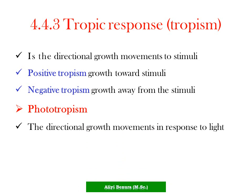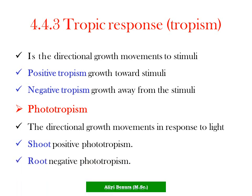Phototropism is the directional growth movement in response to light. For example, the shoot is positively phototropic, whereas the root is negatively phototropic. This means the shoot grows toward the light, while the root grows away from the light.